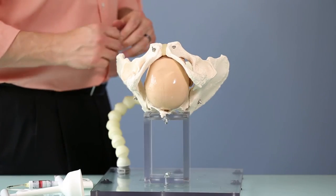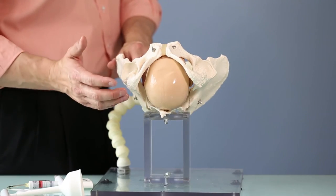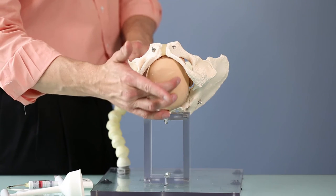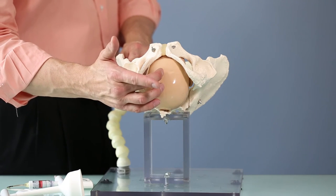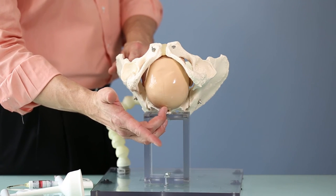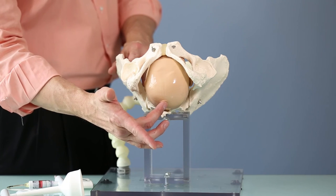In the occiput posterior position, the presenting part becomes the anterior fontanelle. The posterior fontanelle is all the way back here and the flexion point is just three centimeters forward here.